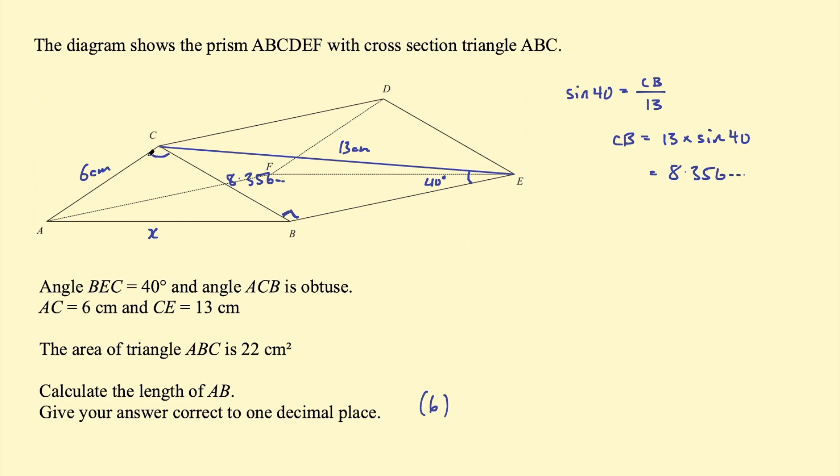Okay, so we have this length CB 8.356 and now we want this angle. So how can we find that angle? One way is to use the sine rule for the area of a triangle, which says the area is equal to half AB sine C. AB being the sides adjacent to the angle and angle C being the angle in between them.